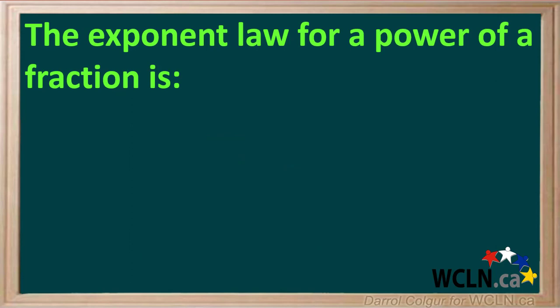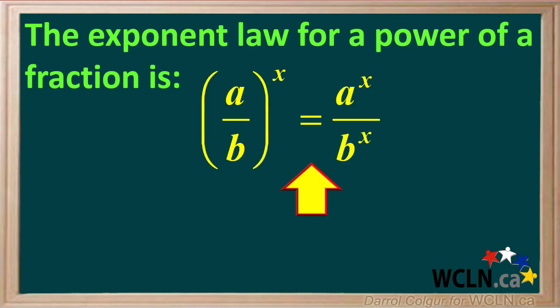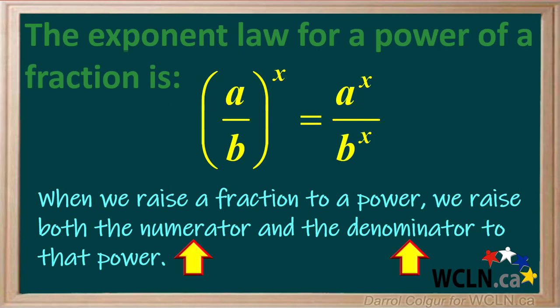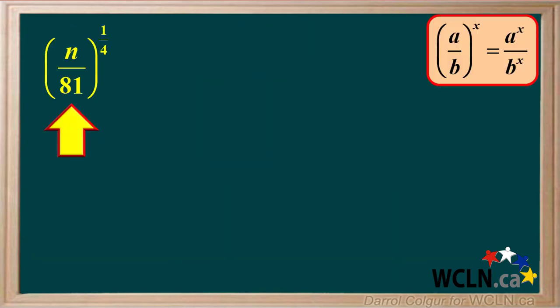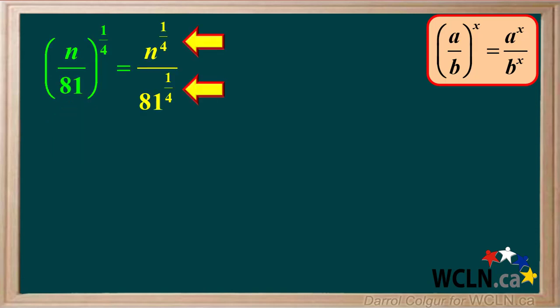The exponent law for a power of a fraction is: a over b all to the power of x is equal to a to the power of x over b to the power of x. In other words, when we raise a fraction to a power, we raise both the numerator and the denominator to that power. We have the fraction n over 81 raised to the power of 1 quarter. Using this exponent law, we get n to the power of 1 quarter over 81 to the power of 1 quarter.